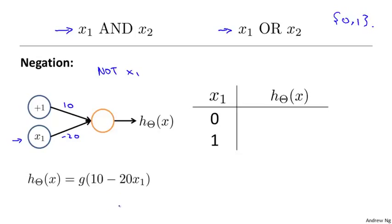So when x1 is equal to 0, my hypothesis would be computing g of 10 minus 20 times 0, which is just 10, and so that's approximately 1. And when x is equal to 1, this would be g of minus 10, which is therefore approximately equal to 0. And if you look at what these values are, that's essentially the NOT x1 function.